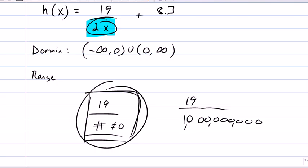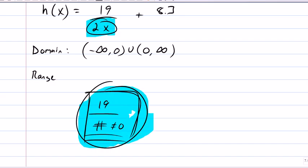You're gonna get something really, really small. So, we can make this thing be everything except zero. So, this is gonna turn into everything except zero.